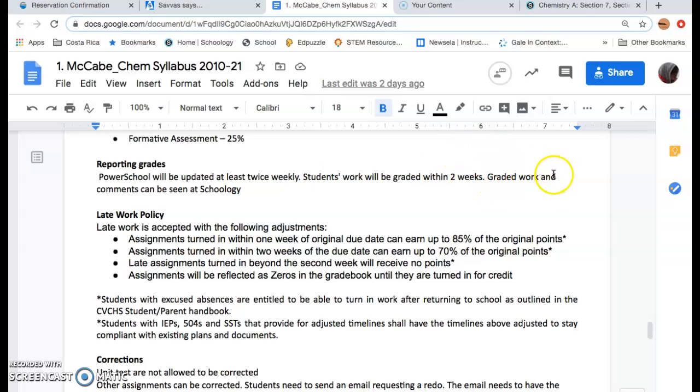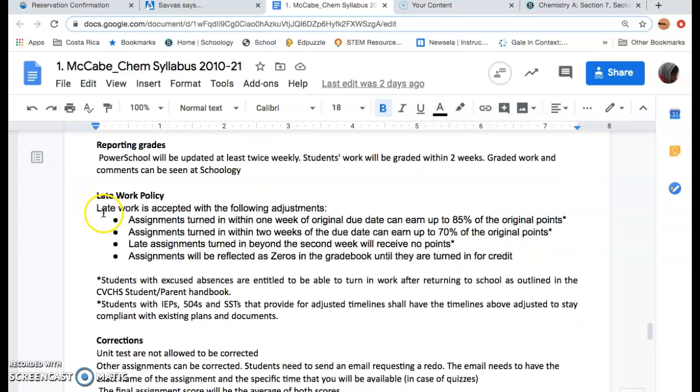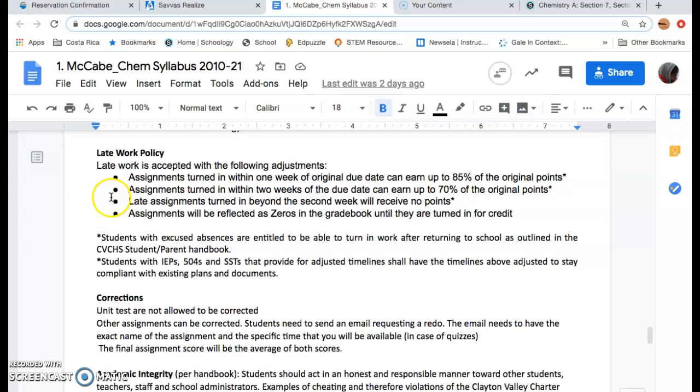Graded work and comments can be seen on Schoology. If you got 100%, you probably won't see any comments, or if you got a minor things, I'll point it out. But I make comments either on a document or in PowerSchool. So if you got a grade that's not what you wish it was, make sure that you look at the comment. Late work policy—this policy has changed, so be aware that it's not the same as last year.